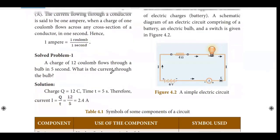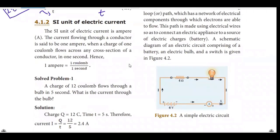This is page number 43. A charge of 12 coulomb flows through a bulb in 5 seconds. What is the current through the bulb? Now, charge is given. Q is equal to 12c. The time is 5 seconds.